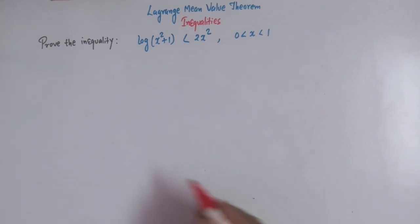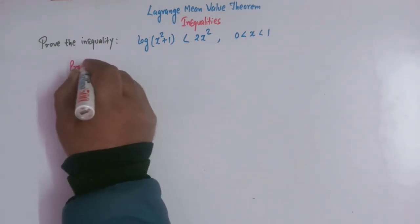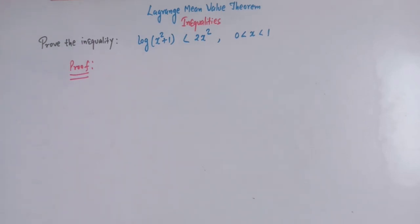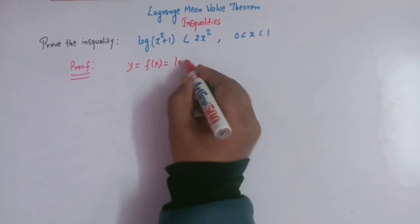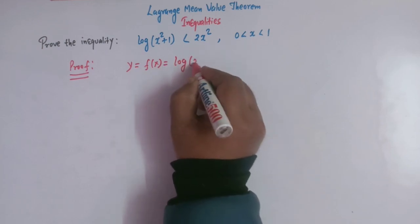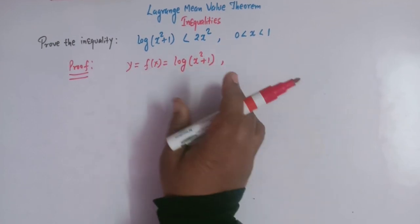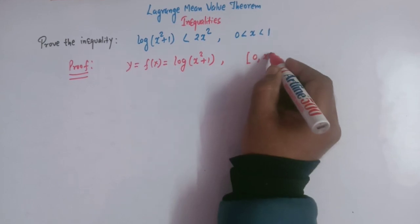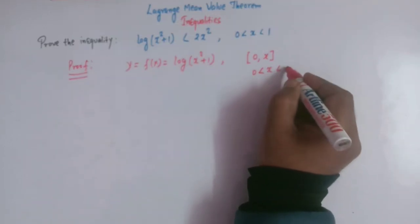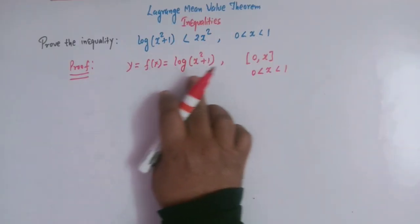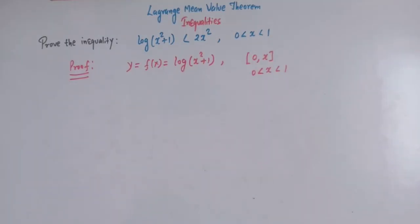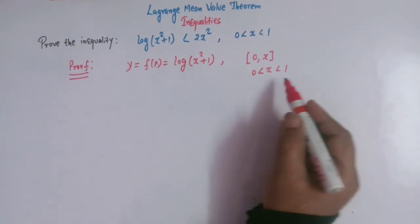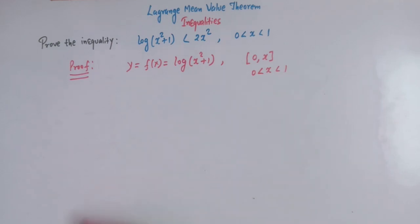First of all we will take an appropriate function. We will take a function of this form: y = f(x) = log(x² + 1), and we will define this function in the interval [0, x] where x lies between 0 and 1. We will apply this function to the Lagrange's Mean Value Theorem and check whether its conditions are satisfied in this interval.